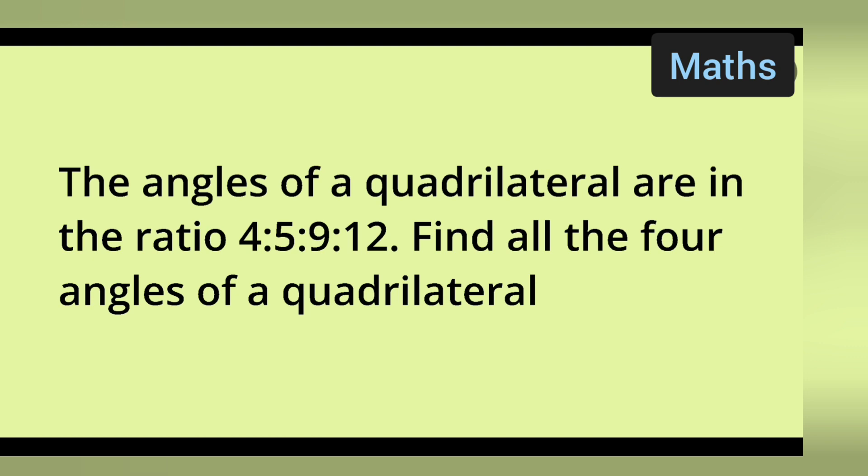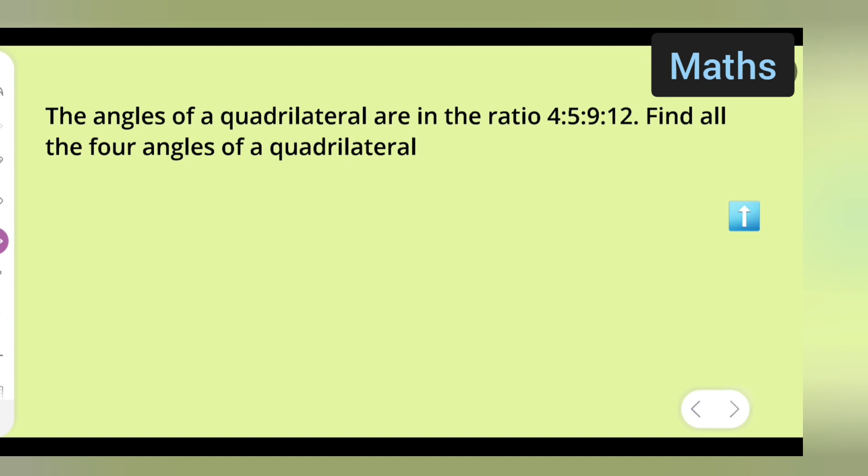The question is: the angles of a quadrilateral are in the ratio 4:5:9:12. Find all four angles of the quadrilateral. So first, you'll have to write the question.